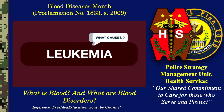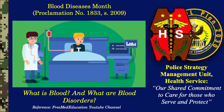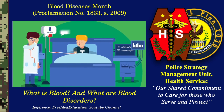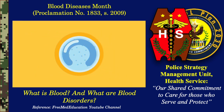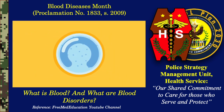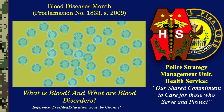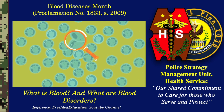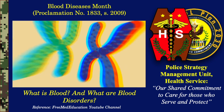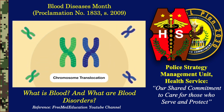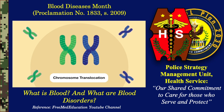What causes leukemia? Is leukemia hereditary? The exact cause of leukemia is not known, but it is thought to involve a combination of genetic and environmental factors. Leukemia cells have acquired mutations in their DNA that cause them to grow abnormally and lose functions of typical white blood cells. It is not clear what causes these mutations to occur. One type of change in the cell's DNA that is common in leukemia is known as chromosome translocation.